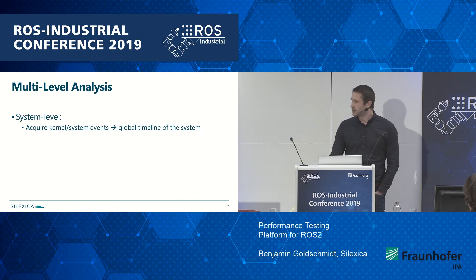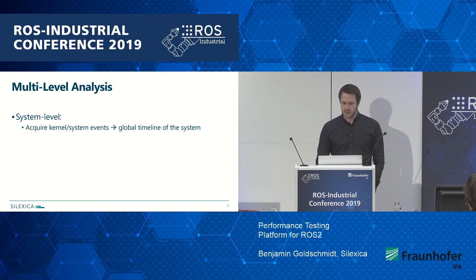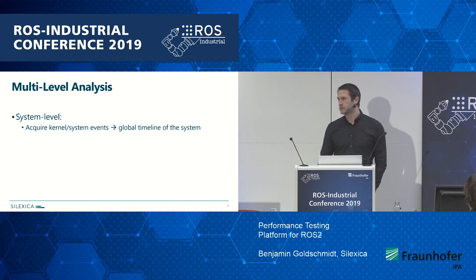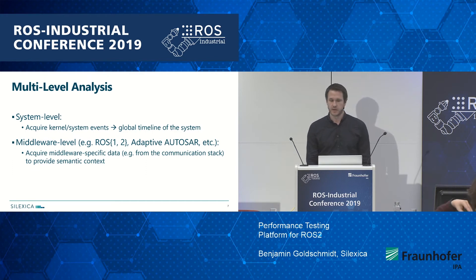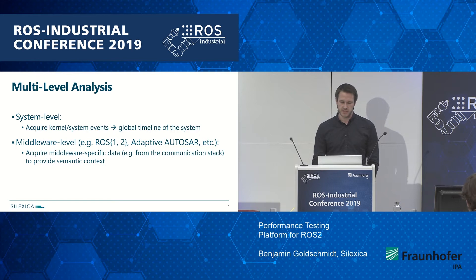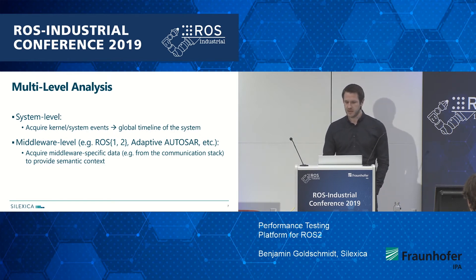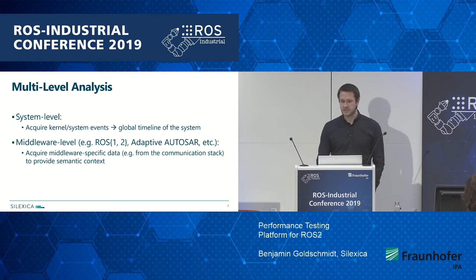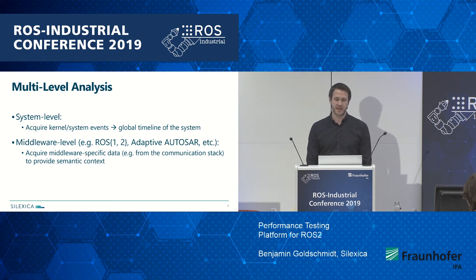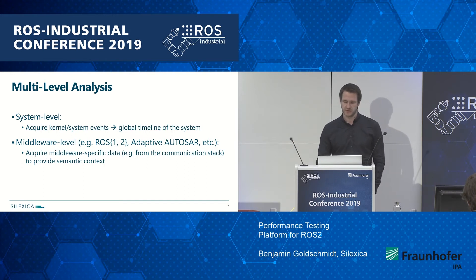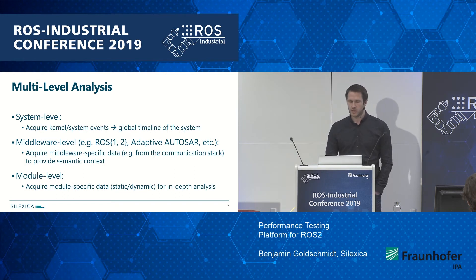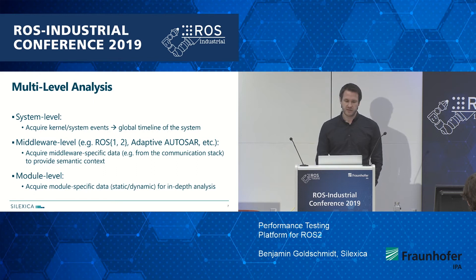Multi-level analysis — what do we mean by that? We acquire data from different sources. We start with system-level data, giving us a global timeline of the system encompassing context switches or anything the kernel does. Next, we acquire data from the middleware — for example, ROS 1 or ROS 2 — and we're also planning to add Adaptive AUTOSAR. With middleware data we add semantic context: before we just had anonymous processes, but now we know this is an actual module doing something specific and we also know its connections. Finally, at the module level, we do static and dynamic analysis to get information down to the code line.